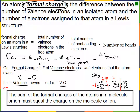Sulfur is in group six; with one lone pair and sharing the remaining electrons, it owns five, giving a formal charge of 6 − 5 = +1. The other oxygen owns six electrons, giving a formal charge of zero. Note: the sum of formal charges must equal the overall charge on the molecule or ion — for a neutral molecule, they add to zero.